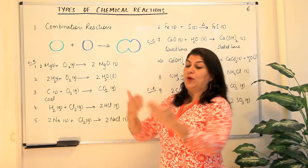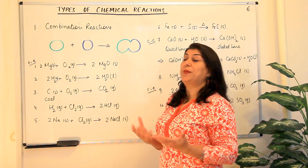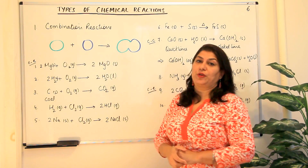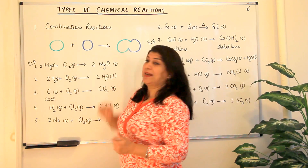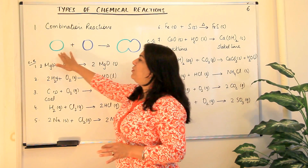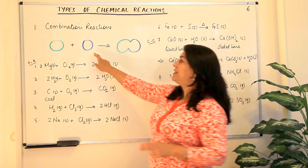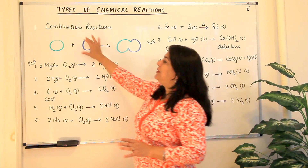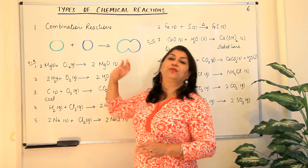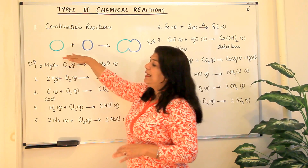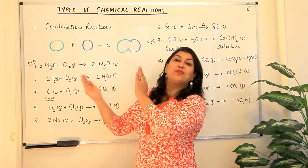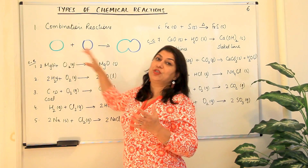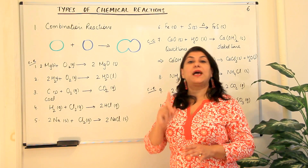When looking at equations and identifying a combination reaction, you need to focus on the number of reactants and the number of products. The reactants can be two different elements, or an element and a compound, or a compound and a compound. Whatever the reactants are, they join and fuse together to form just one product — a compound — because at least two elements are joining together, resulting in the formation of a compound.